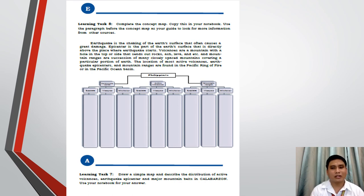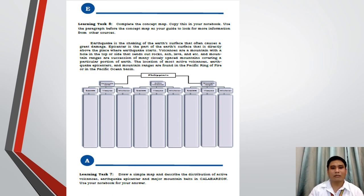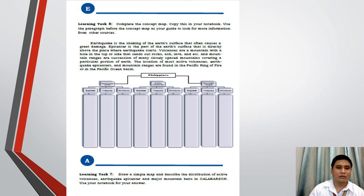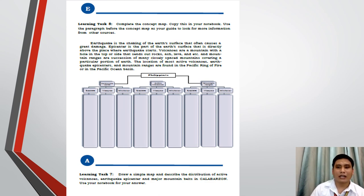For learning task number 9, your task is to draw a simple map and describe the distribution of active volcanoes, earthquake epicenters, and major mountain belts in Calabarzon. This area is composed of Cavite, Laguna, Batangas, Rizal, and Quezon. Draw the map and mark the location of active volcanoes, earthquake-prone areas, and the major mountain belts in Calabarzon.